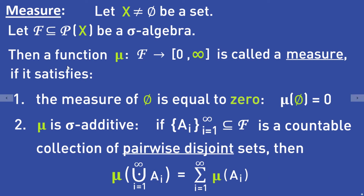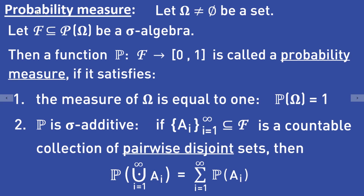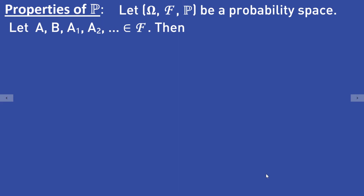This is the definition of a general measure, but as I said before we will focus on probability measures, so you can forget the definition of a general measure for now. Before we take a look at some easy examples of probability measures I want to show you some basic properties and calculation rules for probability measures.